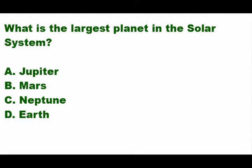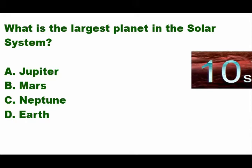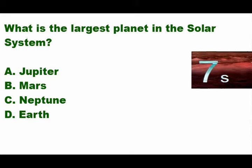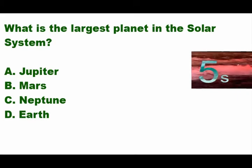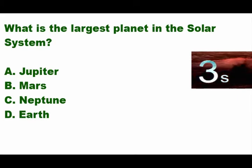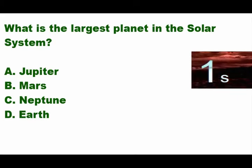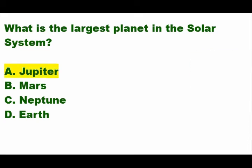This one is very easy. What is the largest planet in the solar system? Is it A) Jupiter, B) Mars, C) Neptune, or D) Earth? The answer is letter A — Jupiter. Jupiter is the largest planet in the solar system.